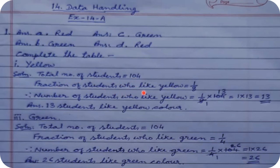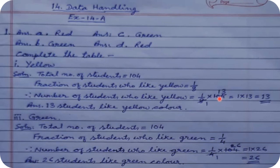Looking at the pie chart, yellow covers one part out of eight equal parts of the whole circle, so the fraction is 1/8. Number of students who like yellow = 1/8 of 104 = 13. Hence 13 students like yellow.